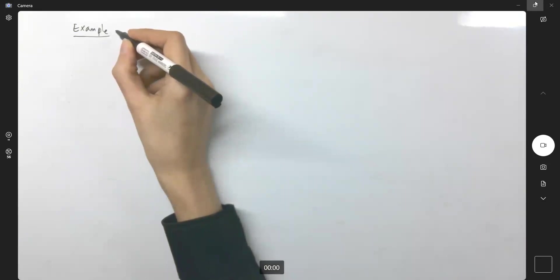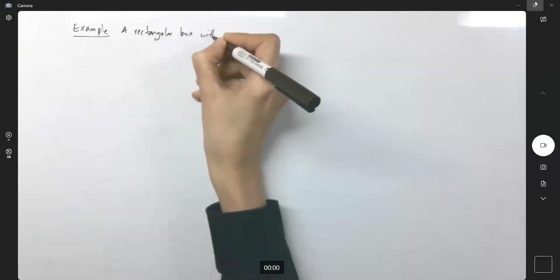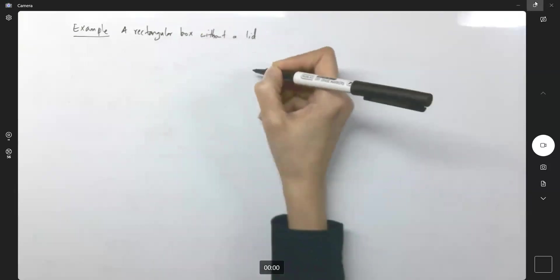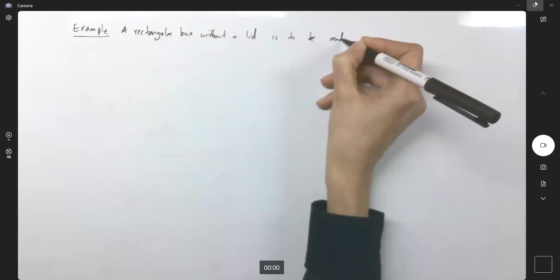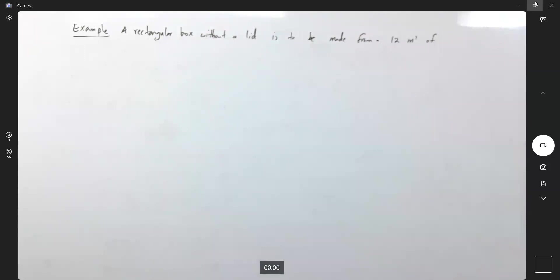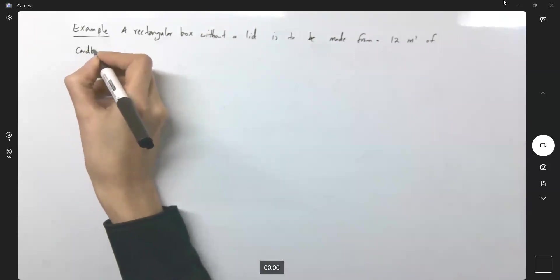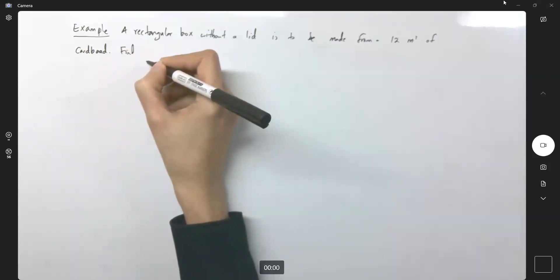We are the engineers. In this example, the question says a rectangular box without a lid is to be made from 12 square meters of cardboard.